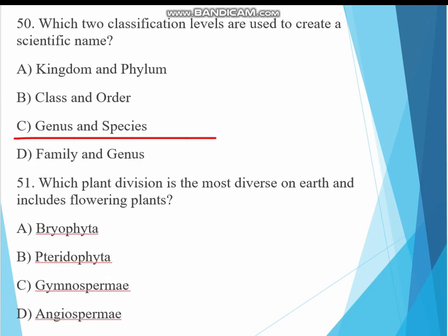Question 51. Which plant division is the most diverse on earth and includes flowering plants? A. Bryophyta, B. Pteridophyta, C. Gymnosperm, D. Angiosperm. The answer must be angiosperm, the most diverse flowering and fruit-bearing plants.